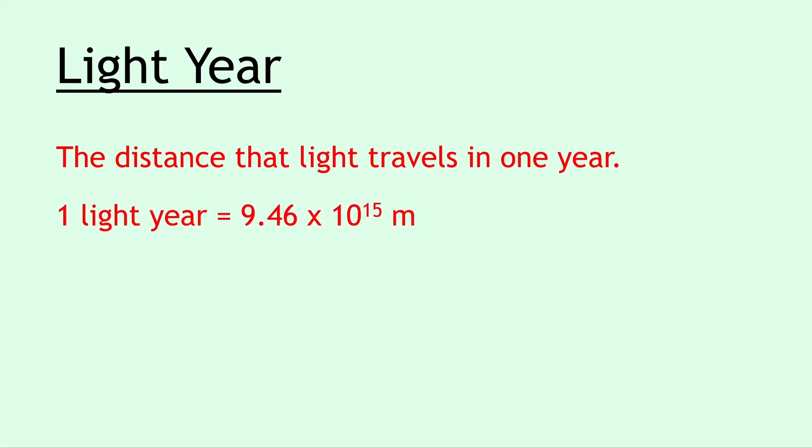Next, we have the light year, and this is defined as the distance that light travels in one year. And we say that one light year is equal to 9.46 times 10 to the power of 15 meters. You need to either remember this number so that you can do conversions between light years and meters, or you need to be able to get to that number using the speed distance time equation.